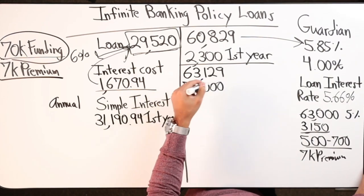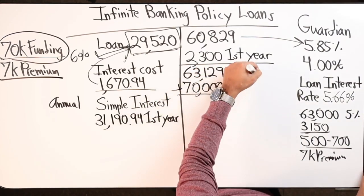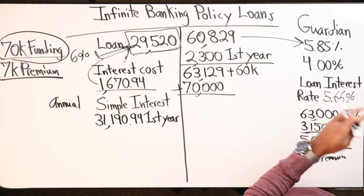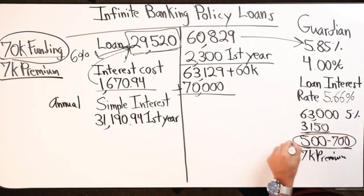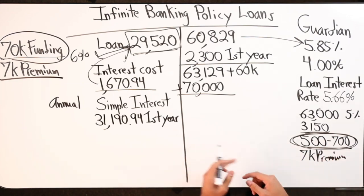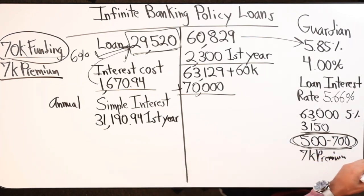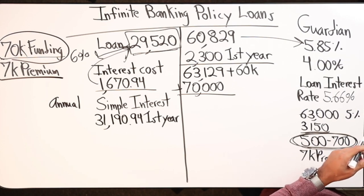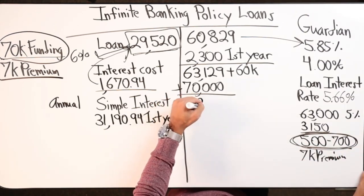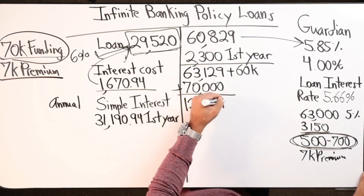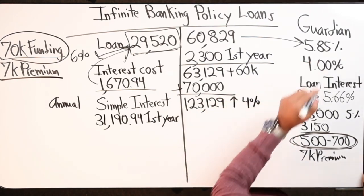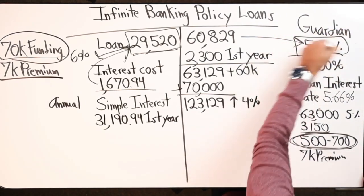So $63,129 plus $60,000 - I'm being conservative here, it should be more. The second year around, my one-year term insurance will drop a little bit, it starts to drop every single year, which allows more money to go into the cash value. So $63,129 plus $60,000 - now I'm at $123,129 growing.